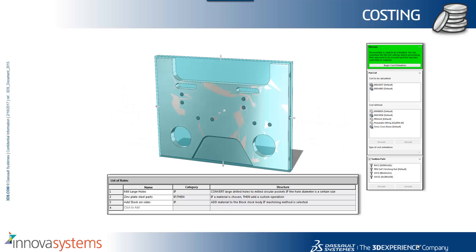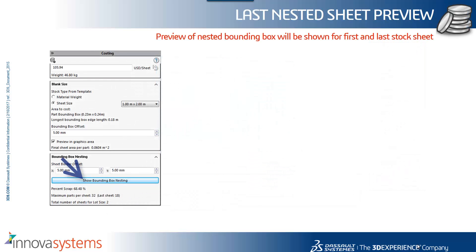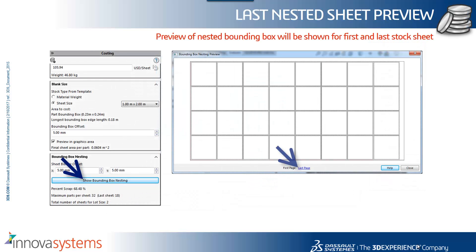We'll take a look now through the costing updates for 2017. So firstly, when working with the nested bounding box for sheet metal components, we now have a quick link to access the last page. So no more scrolling through multiple pages of the same nest to see what the sheet optimization usage is on the last sheet.